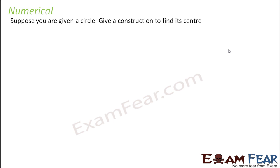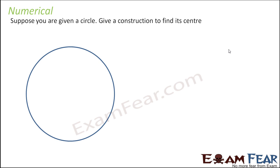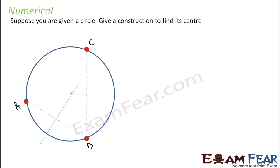Suppose you are given a circle — give a construction to find its center. We are given the circle and we have to find the center. We can just take three points on the circle, name them a, b, and c, join them, and draw the perpendicular bisector of ab and bc. The perpendicular bisectors will meet at a point, and that point will be called the center of the circle. This works because OA, OB, and OC are all of the same length, which is the radius.